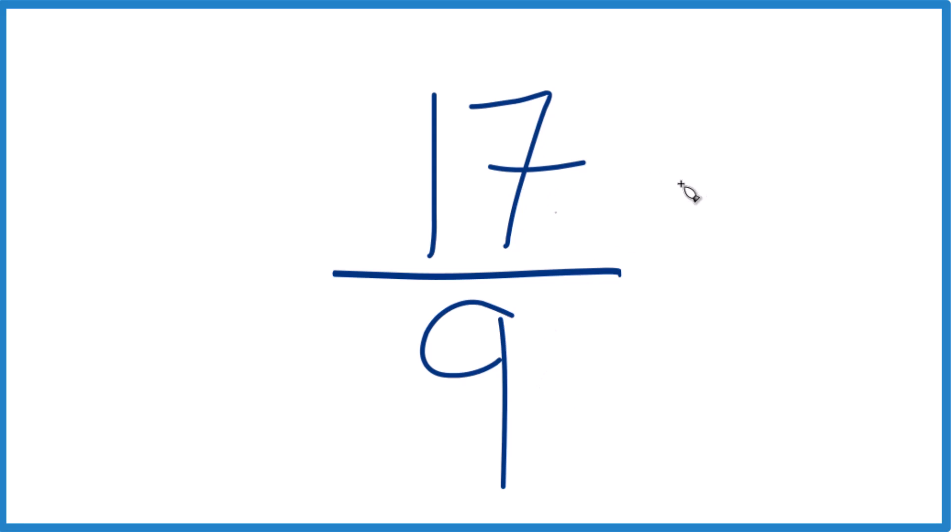And if you divide 17 by 1 and 9 by 1, you get 17 ninths. So this, it's already simplified. We can't reduce it any further.